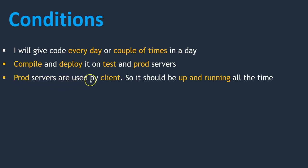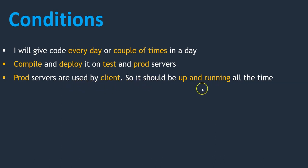The next condition is: production servers are used by clients, so they should be up and running all the time. This is one of the biggest problems — the code may or may not work on production systems, and if it's not working, it's difficult for clients. Only working code should be deployed. To achieve these three conditions, we need to do some activities or automation before copying developer code onto the server.